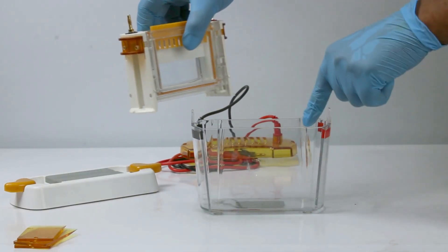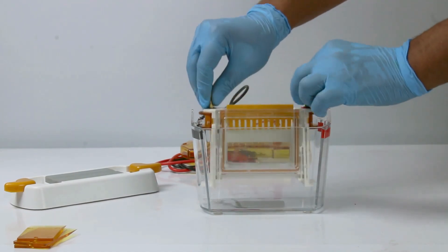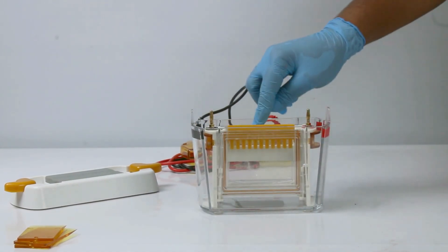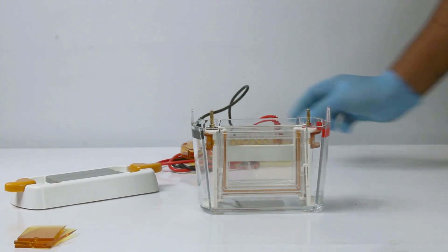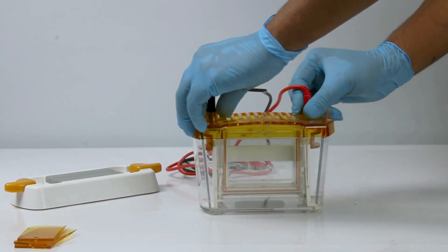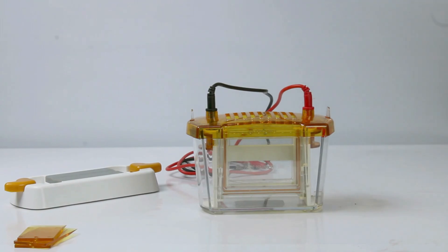Ensure the buffer level reaches the edge of the concave glass, at least 20mm deep. Carefully remove the comb and load the sample into the well. Close the tank and connect to the power supply to start electrophoresis.